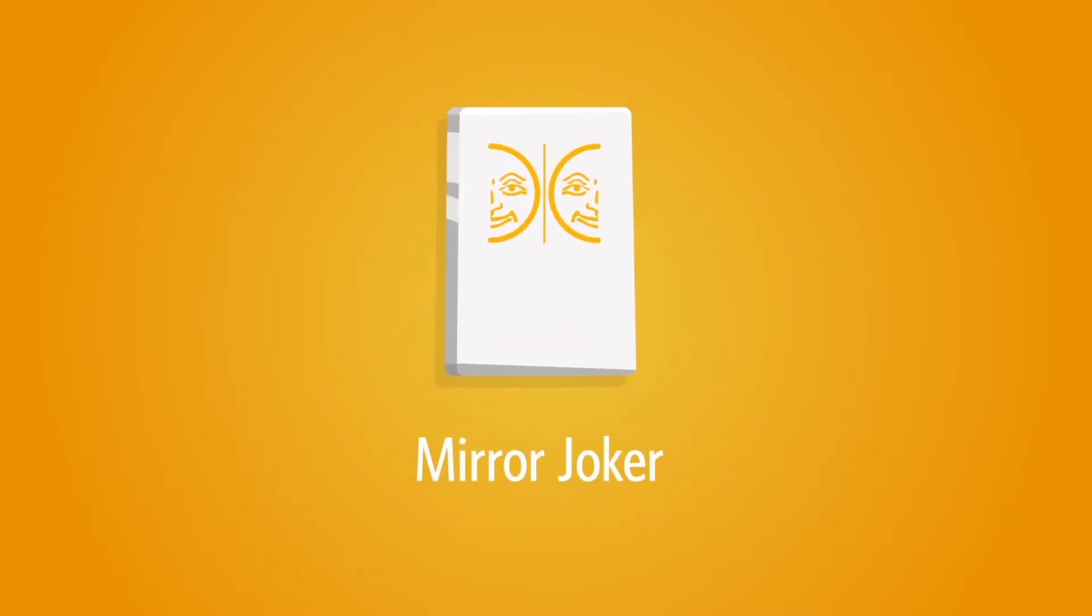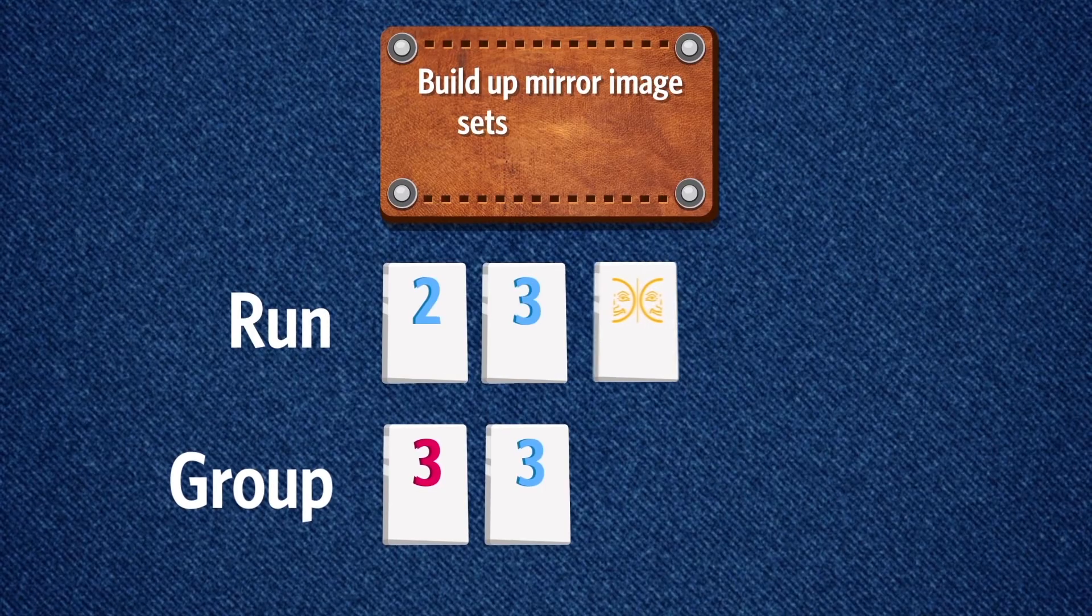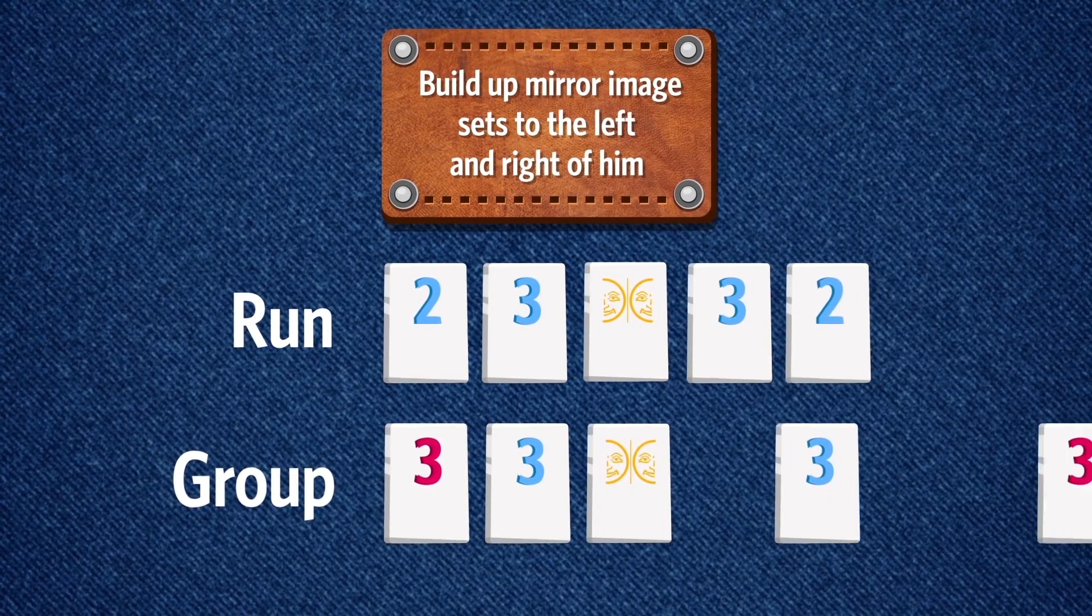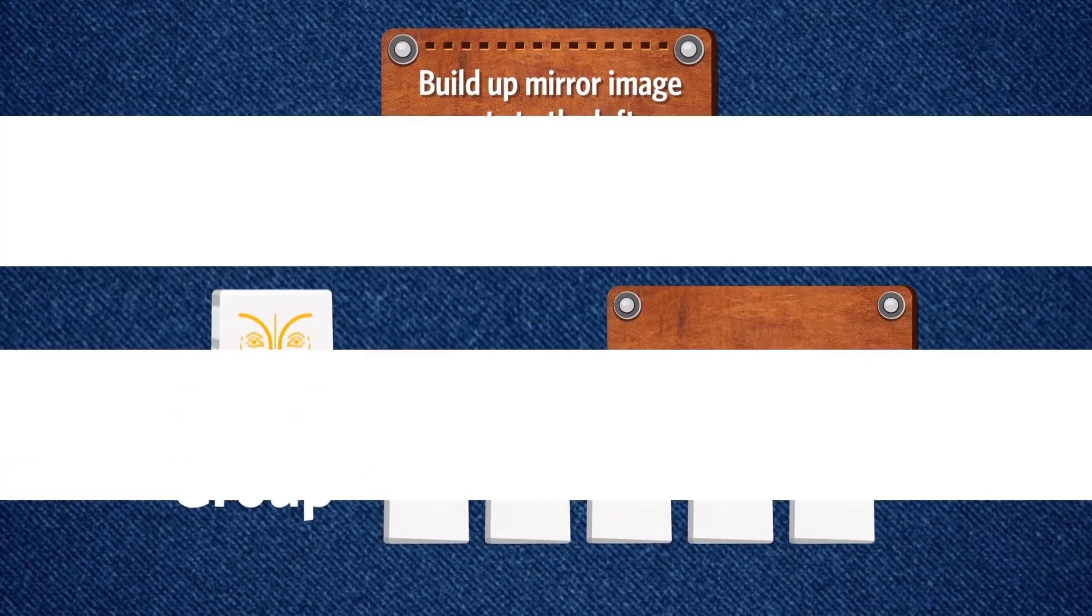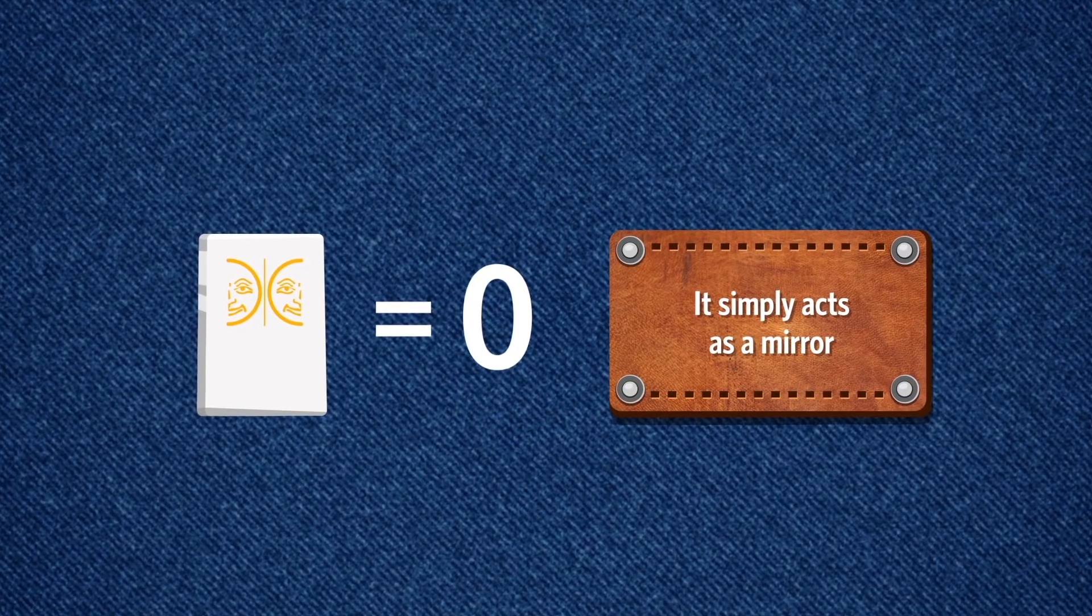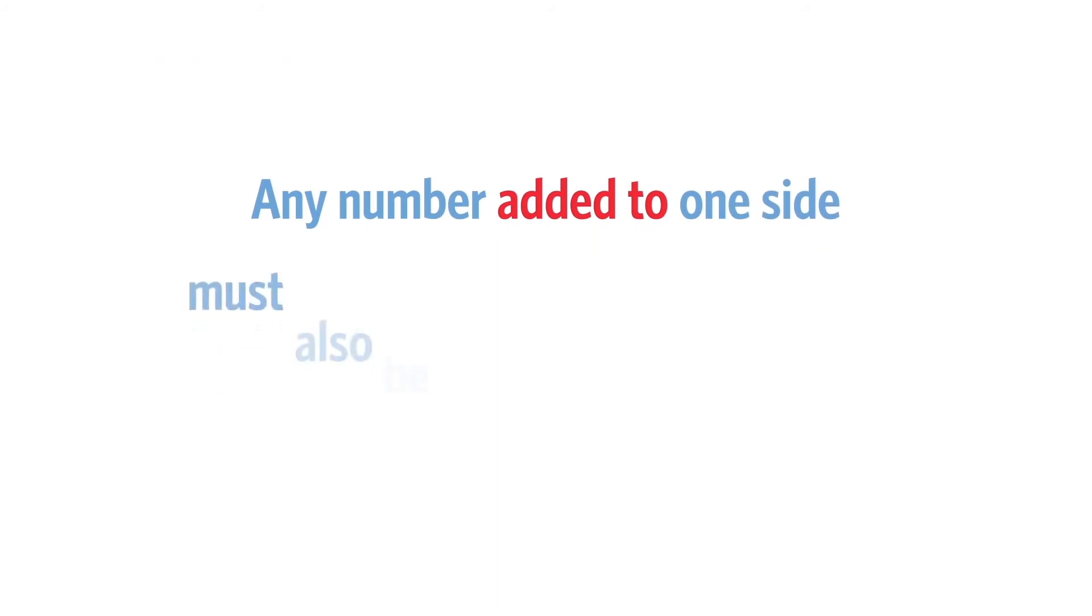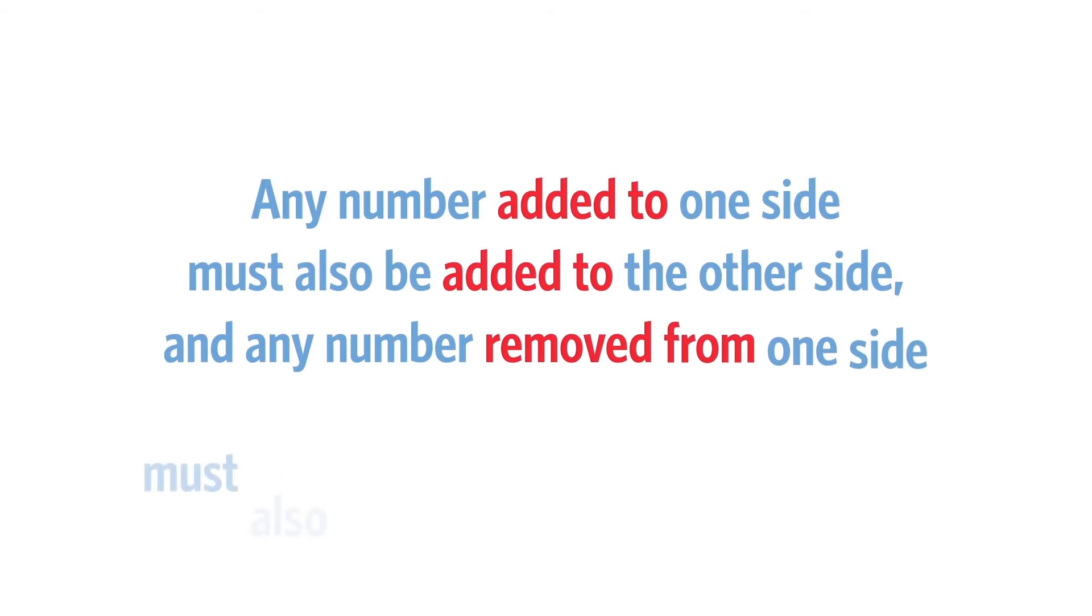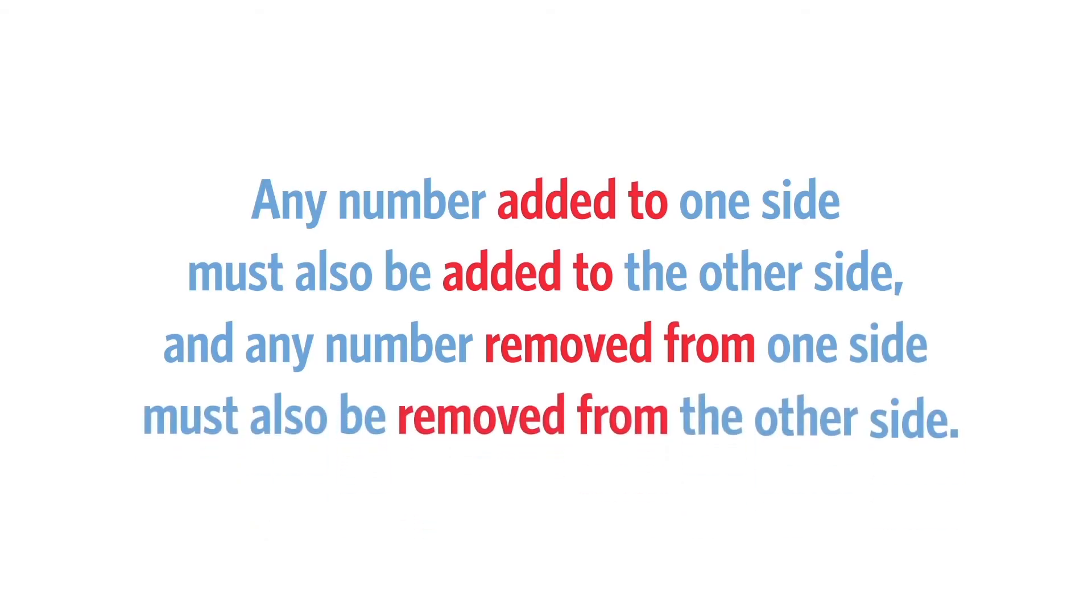Mirror joker. Use the joker in sets of runs and groups. Build up mirror image sets to the left and right of him. The mirror joker's value is zero. It simply acts as a mirror. Any number added to one side must also be added to the other side, and any number removed from one side must also be removed from the other side.